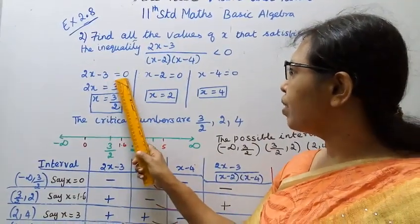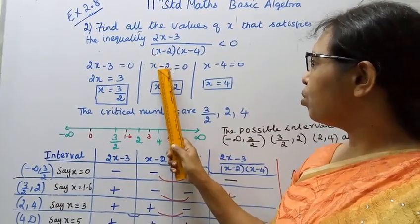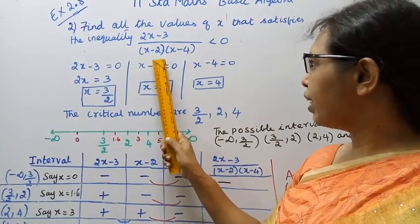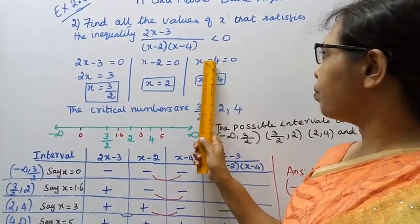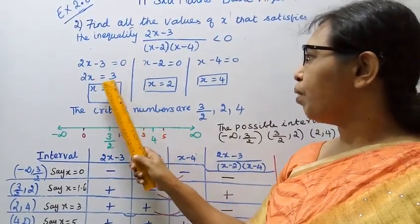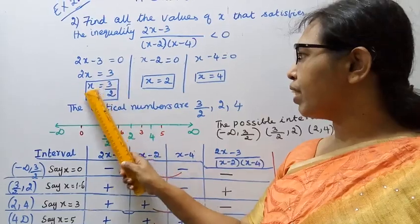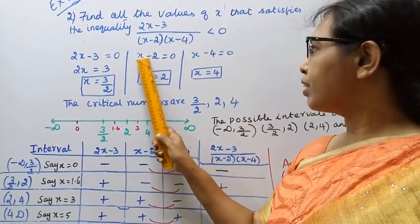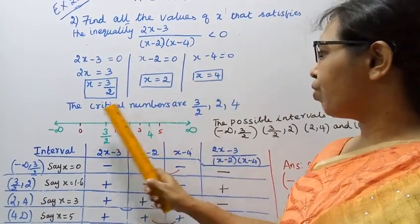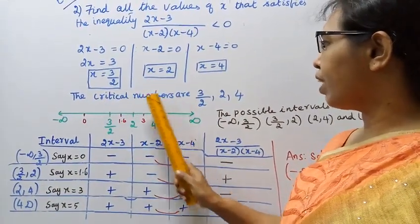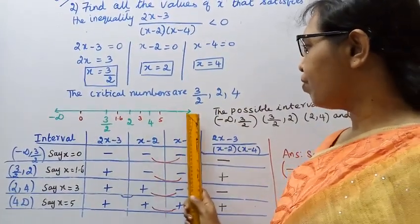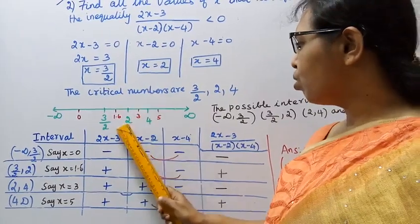Set 2x-3 equal to 0, x-2 equal to 0, and x-4 equal to 0. Solving: 2x minus 3 gives x = 3/2. x-2 = 0 gives x = 2. x-4 = 0 gives x = 4. The critical numbers are 3/2, 2, and 4.